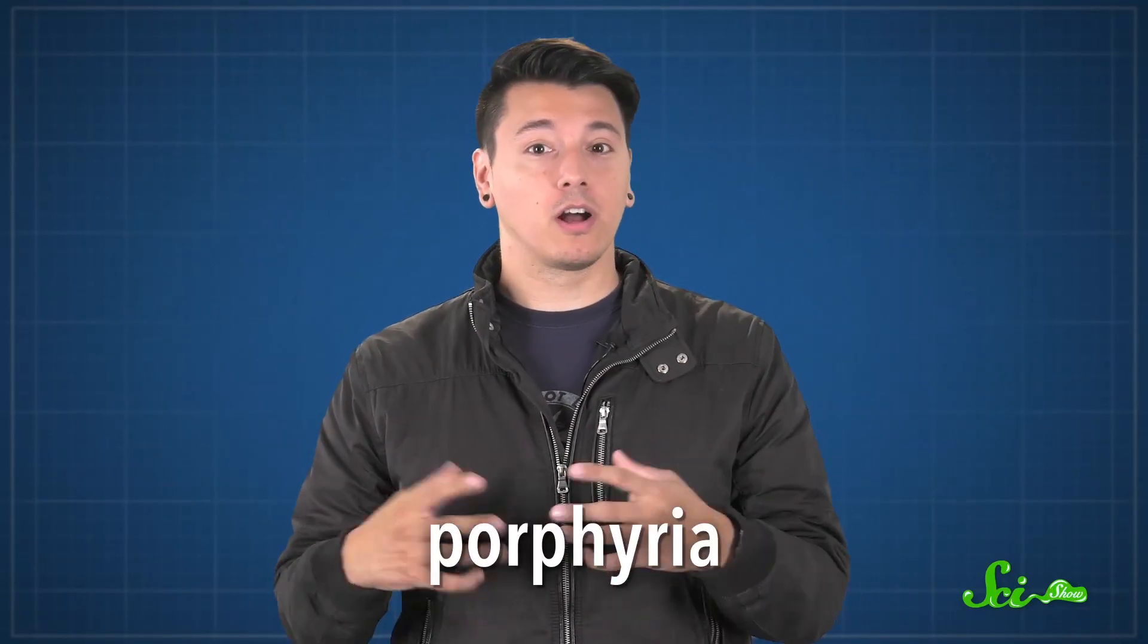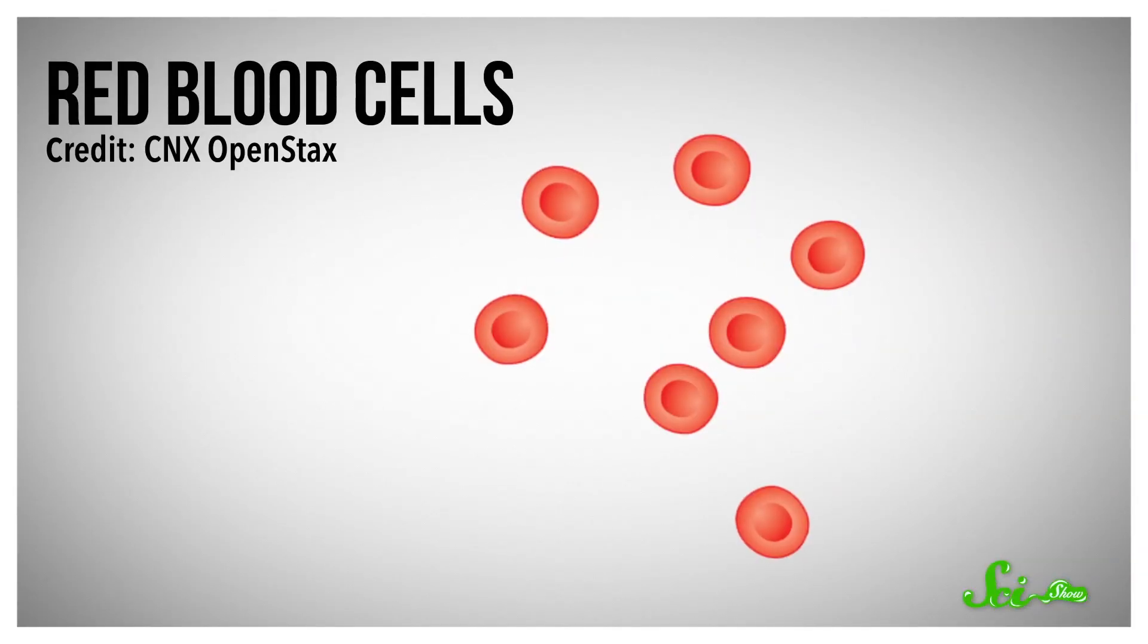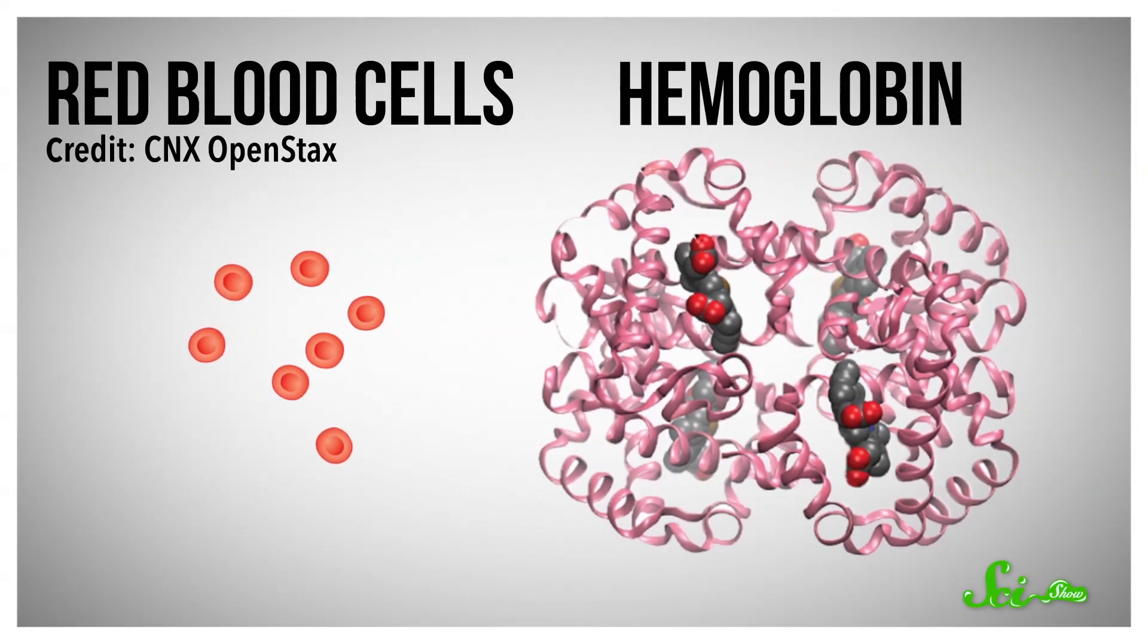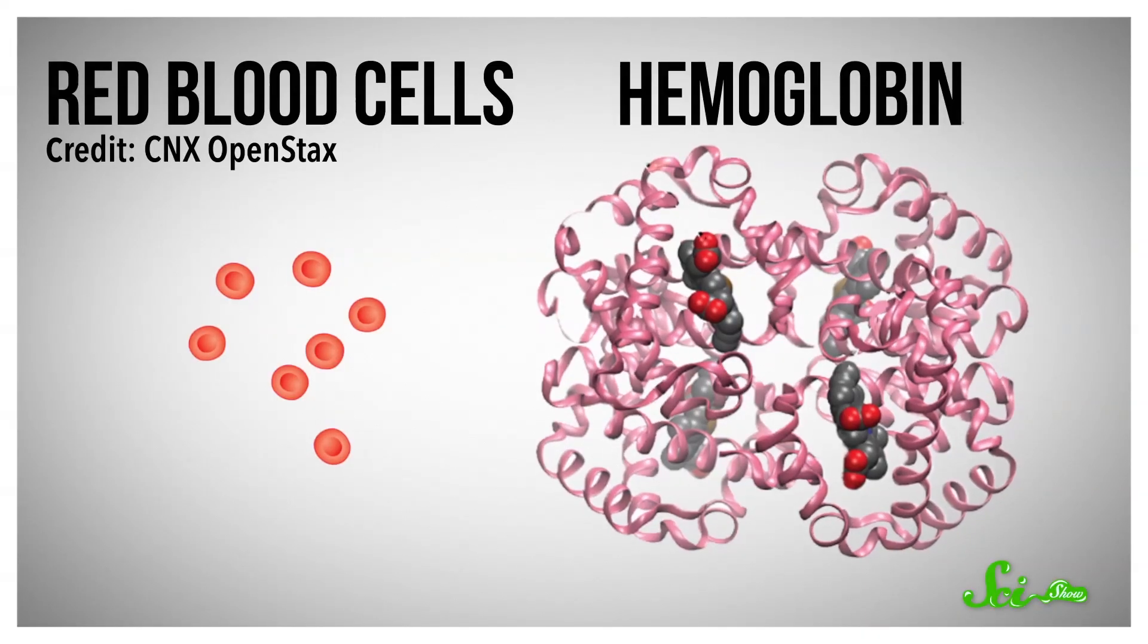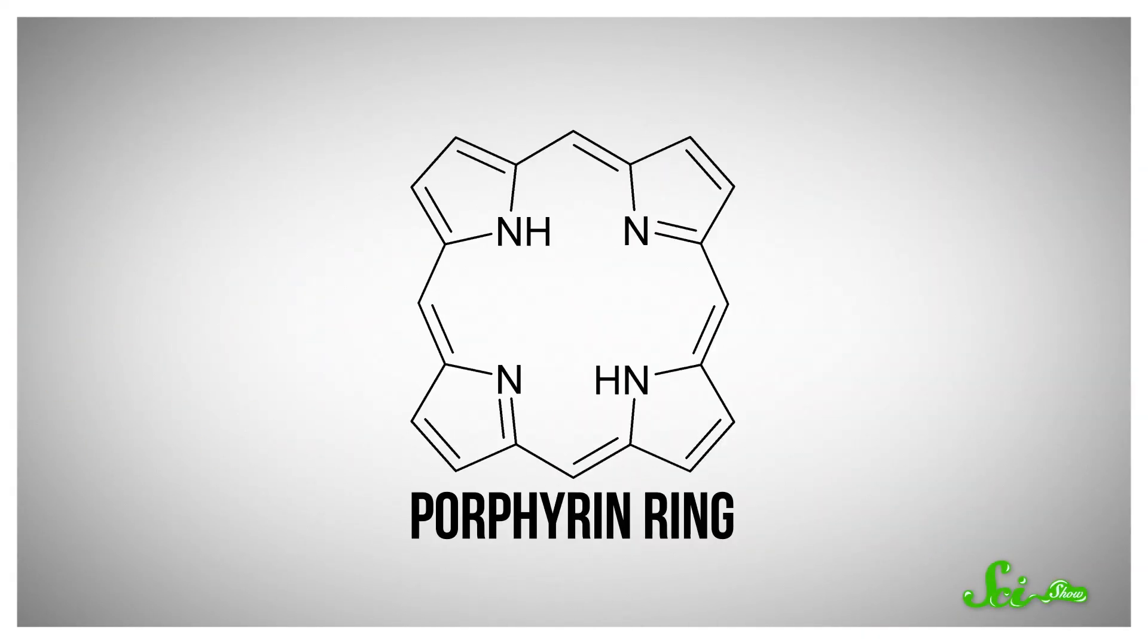The first possible connection is a group of disorders called porphyria, which are caused by too much of a molecule in your blood called porphyrin. Your red blood cells mostly contain a massive protein called hemoglobin, which moves oxygen and carbon dioxide around your body. And in the middle of hemoglobin is a ring of carbon, nitrogen, and hydrogen called a porphyrin ring.